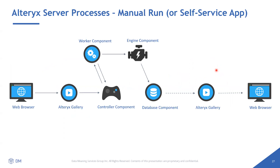For a manual run, if you want to run workflows from the web browser, you access them from the gallery. The gallery sends the information to the controller. The controller is always talking to the worker — when the worker is free, the controller delegates the job to the worker, which sends it to the engine. The engine runs the workflow, produces all outputs and logs, which are loaded to the database. You then access everything from the gallery in your web browser.